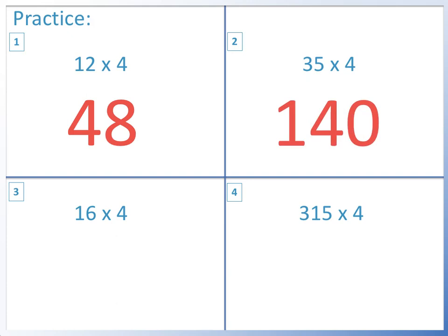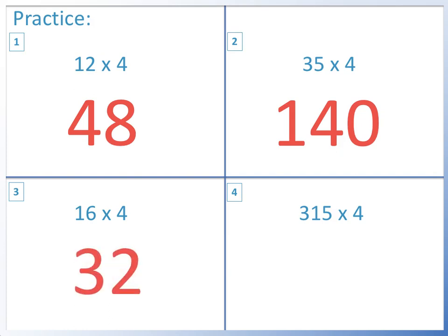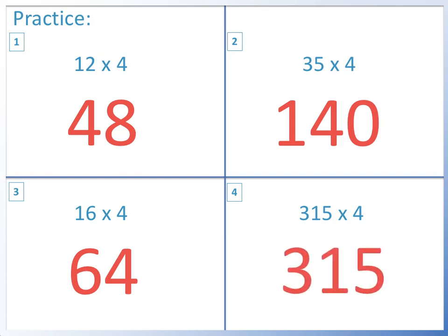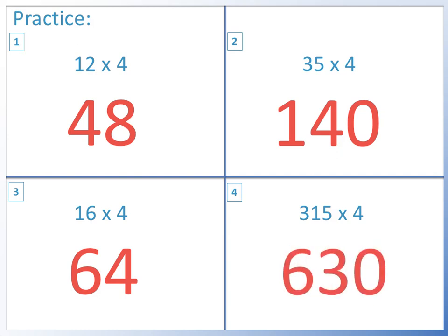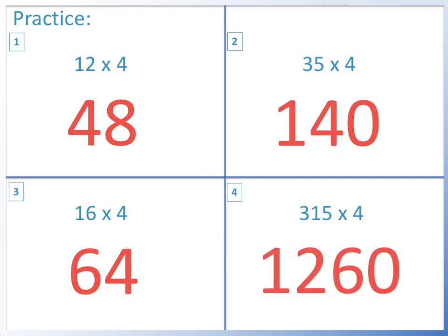Question 3: 16 times 4. Double it equals 32. Double it again equals 64. Question 4: 315 times 4. Double it equals 630. Double it again equals 1,260.